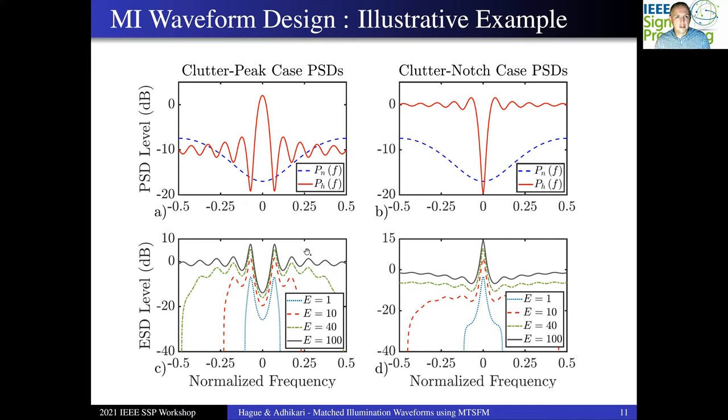In order to measure the goodness of fit to these ESD shapes, we're going to use that d squared metric. We're going to compute the d squared metric of the ideal MI waveform, the d squared metric for a series of multi-tone SFM waveforms for a variety of transmit energies. And also as a means of comparison, we're going to compute the detection metric for a flat spectrum, or in this case, a linear FM waveform, with an equivalent bandwidth to that of these MI waveform designs.